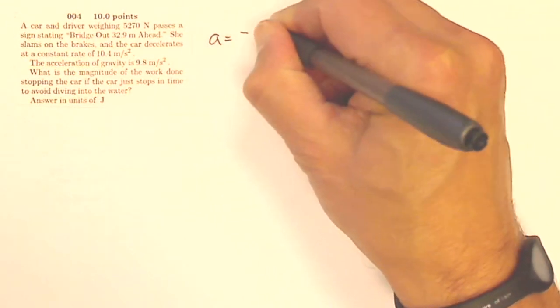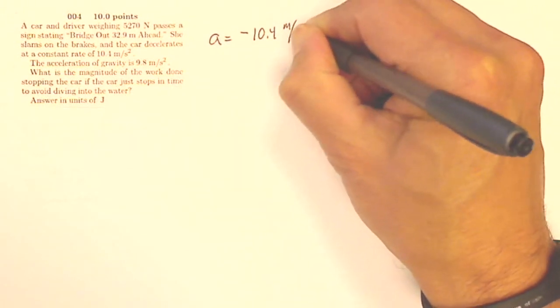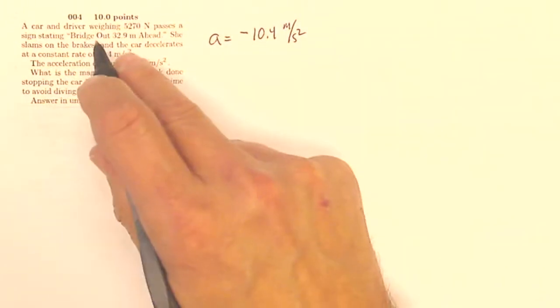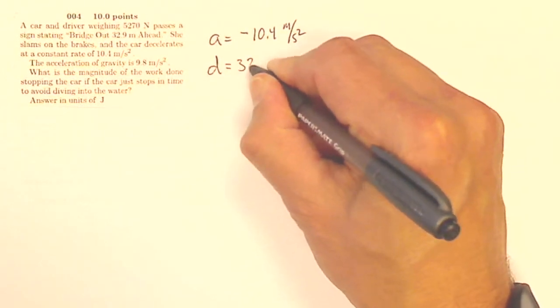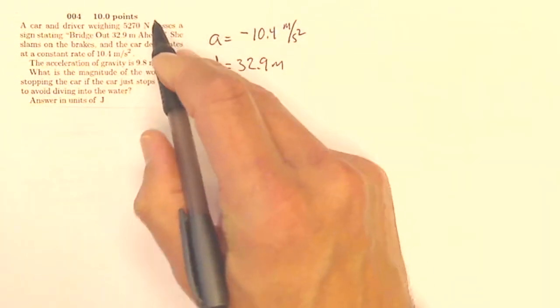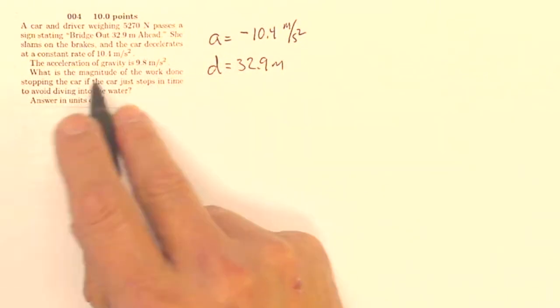So my acceleration is negative 10.4 meters per second squared. My distance I'm going to travel is 32.9 meters. The acceleration of gravity is 9.8.